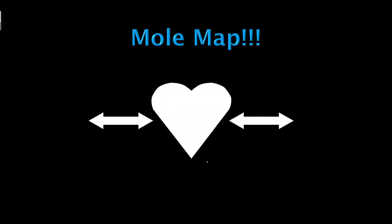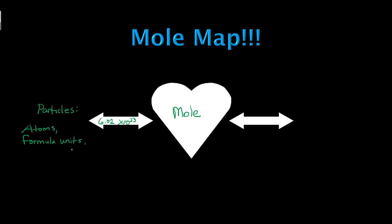First we're going to talk about our mole map, and at the heart of the mole map is the mole. This number here is Avogadro's number, which is 6.02 times 10 to the 23rd. You're going to use that number if you want to get to particles of something. When we talk about particles, we are talking about atoms, formula units, or molecules.